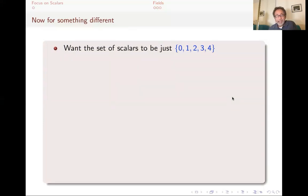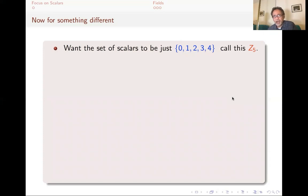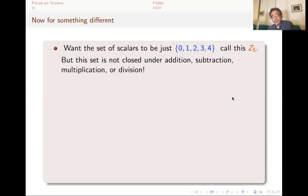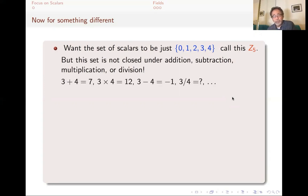Now for something a little bit different. I don't actually want lots of scalars. I only want the scalars to be 0, 1, 2, 3, and 4. I want to explore whether or not I can use them as scalars for a vector space. I'm going to call this Z5. You might say of course not — this set is not closed under addition, subtraction, multiplication, or division. Why not? Because 3 plus 4 is 7, and 7 is not in this set. 3 times 4 is 12, 3 minus 4 is minus 1, and 3 fourths — none of those are elements of this set. So how could this possibly be a field?